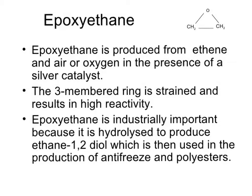It's extremely useful because it can be used to produce ethane-1,2-diol, which is used in antifreeze and the production of polyesters. It's produced from ethylene gas, and in carefully controlled conditions in the presence of air or oxygen, it is produced, but you need a silver catalyst to make this work.